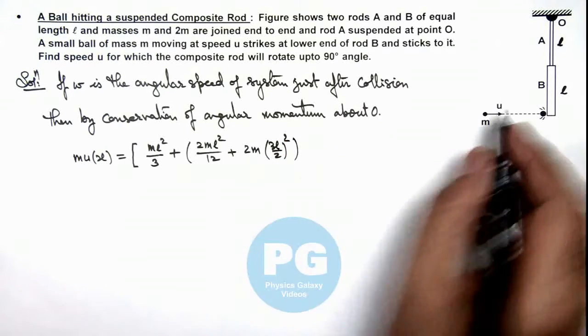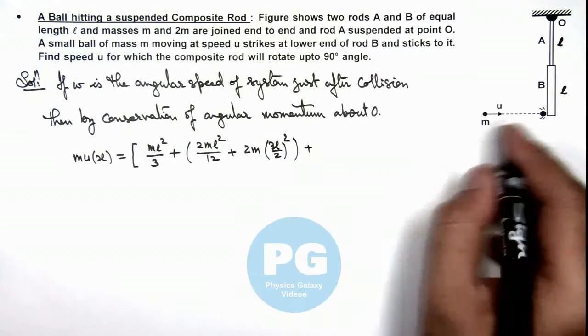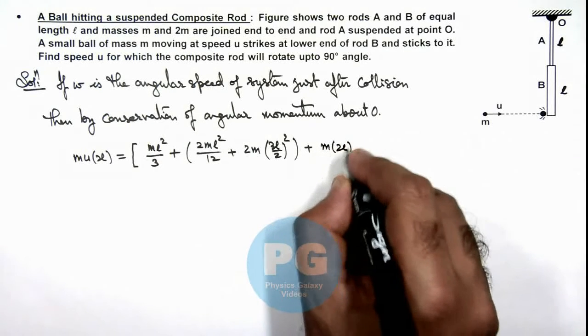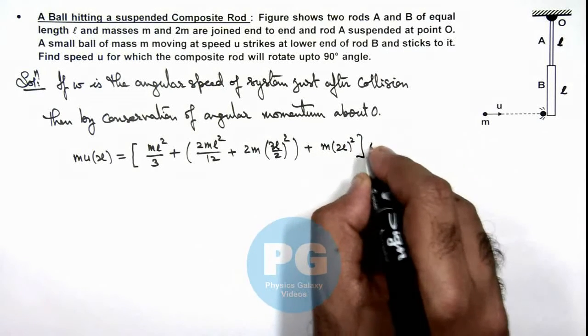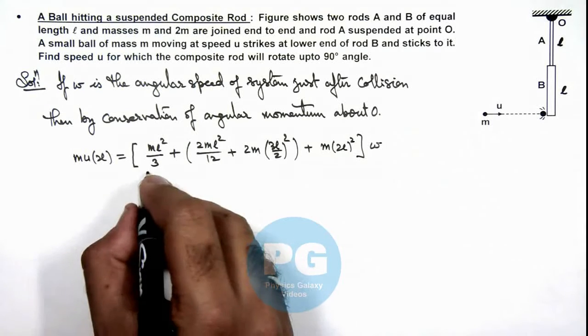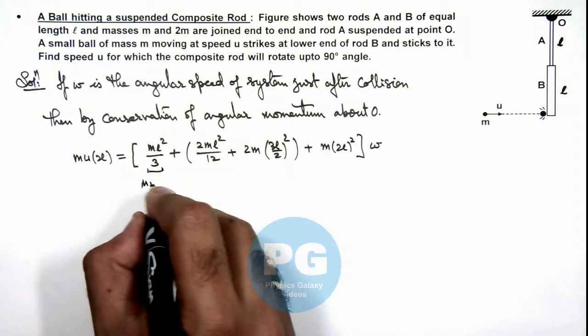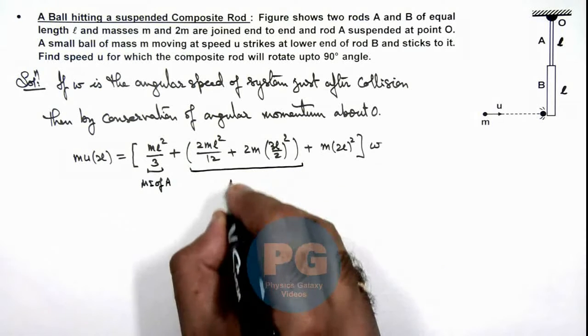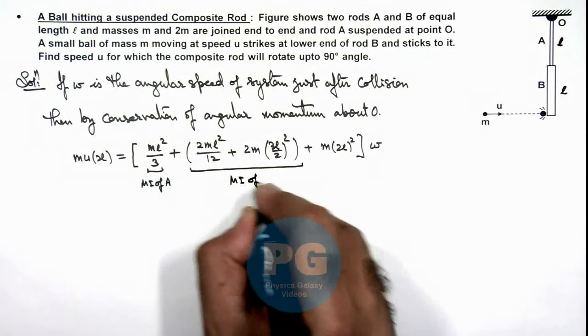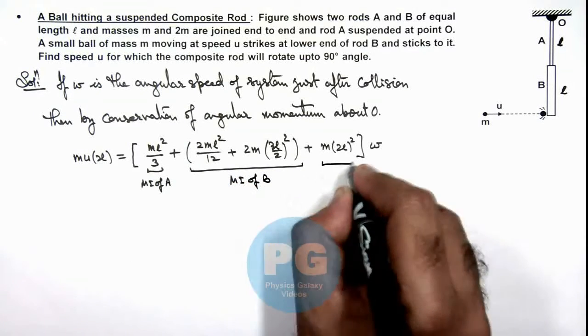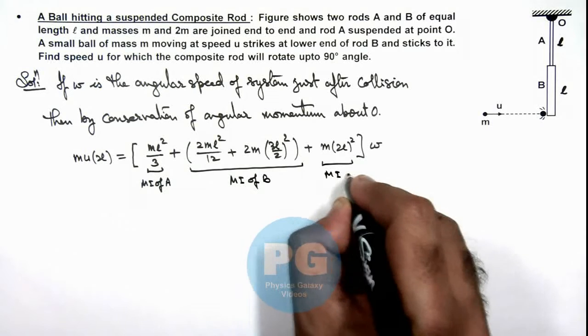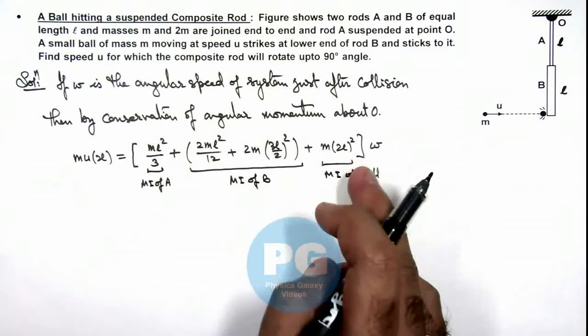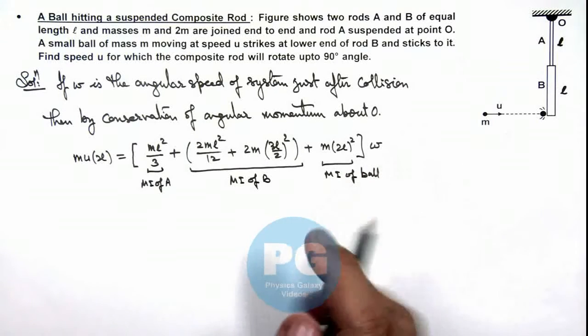This is the moment of inertia of B plus the moment of inertia of this point mass we can write as m multiplied by 2l square, whole multiplied by omega. Here this is the MI of A, and this section is MI of B, and all the moment of inertia we are calculating about point O.